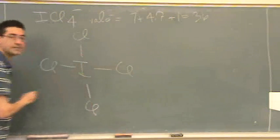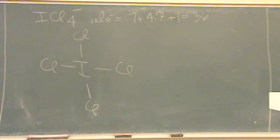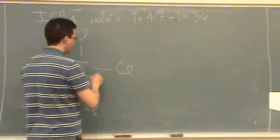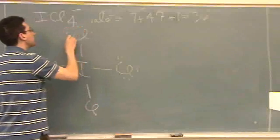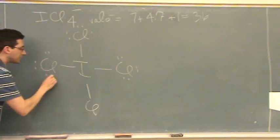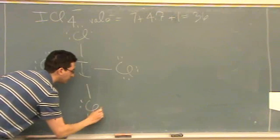2, 4, 6, 8. After you get the bonds, that's 8 of 36, then we draw in the lone pairs. 10, 12, 14, 16, 18, 20, 22, 24, 26, 28, 30, 32.